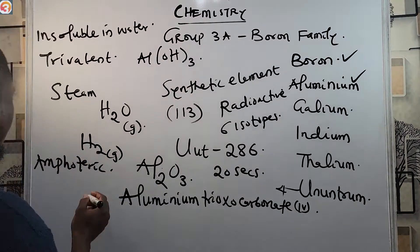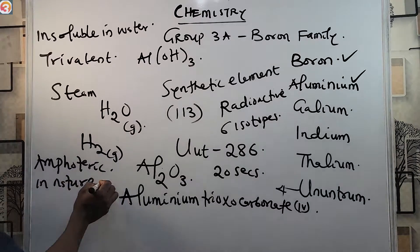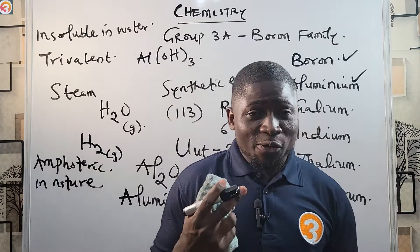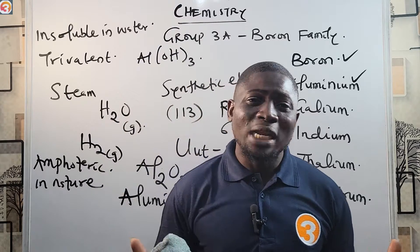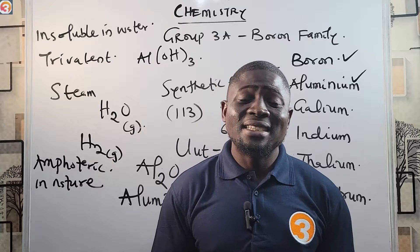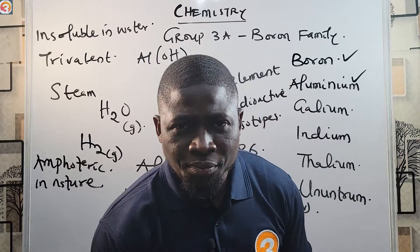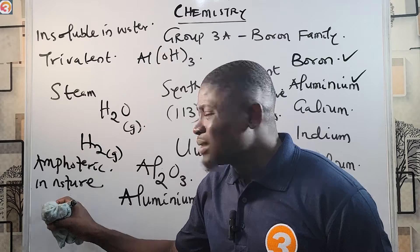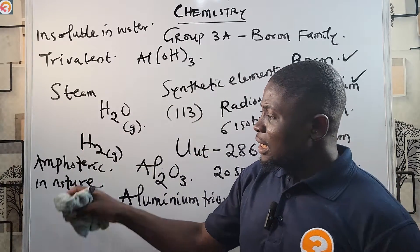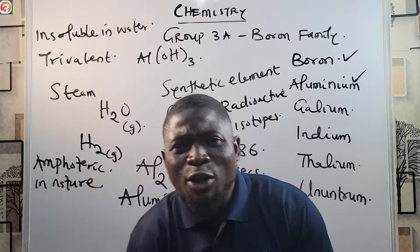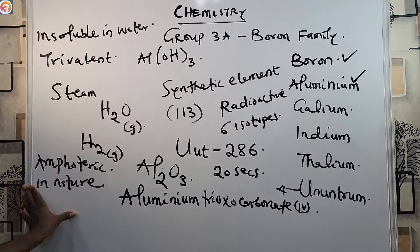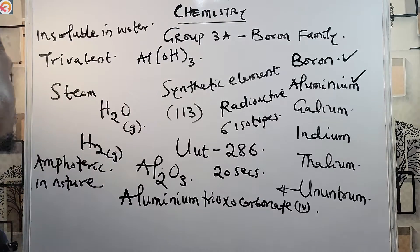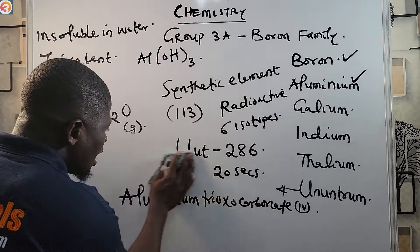Although they are insoluble in water, aluminium oxide and aluminium hydroxide are amphoteric in nature. Amphoteric means they can react as both acids and bases — that is, they can donate protons (acting as an acid) and also accept protons (acting as a base). That is why we say aluminium oxide and aluminium hydroxide are amphoteric.